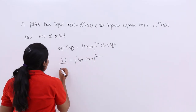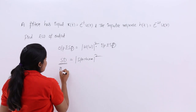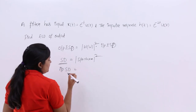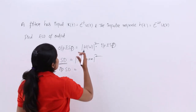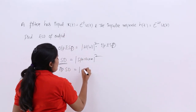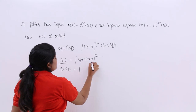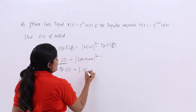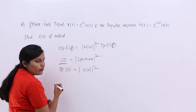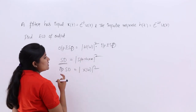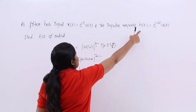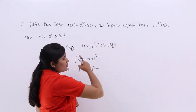For input spectral density, we need the modulus of the spectrum of x(t), which is |X(ω)|² . To find H(ω), we take the Fourier transform of the impulse response h(t). We will calculate both H(ω) and X(ω) and substitute them into the equation.